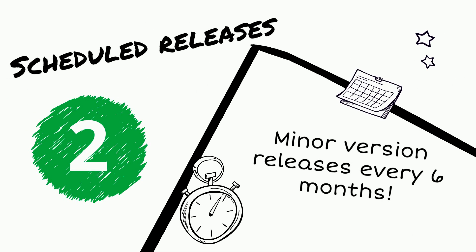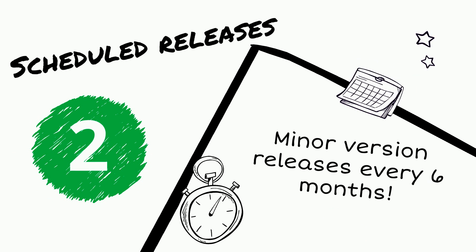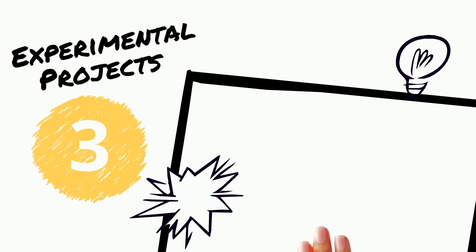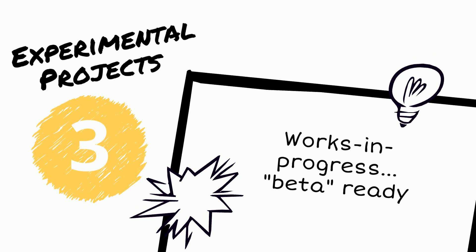Scheduled releases give the community predictable, stabilized new features every six months. No more waiting for a major version release for new features. Experimental projects introduce new features as works in progress in minor version releases, ready for community testing and further development.